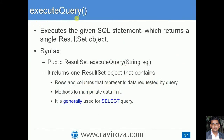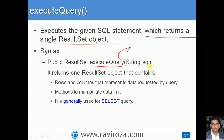Moving to the next method, which is executeQuery(). executeQuery() executes the given SQL statement which returns a single ResultSet object. This is the method most likely to be used for our selection queries. The executeQuery() method returns a ResultSet object — it is used when the query is a selection query and it returns one ResultSet object.